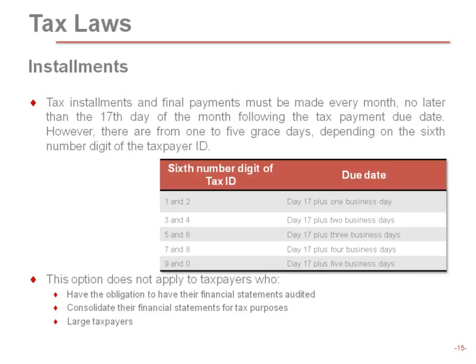All federal taxes are paid on the bank website, so you do need internet banking. When this took place years ago, it was a huge benefit to the banks since every corporation had to have internet banking to pay taxes. Tax installments are due the 17th day of the following month, and most taxpayers get some extra leeway based on the sixth digit of their tax ID or RFC number — getting day 17 plus one, two, or three business days.